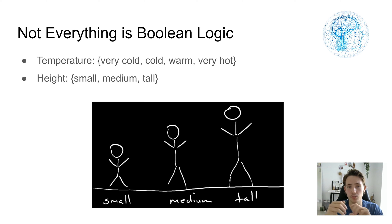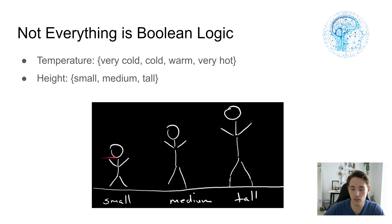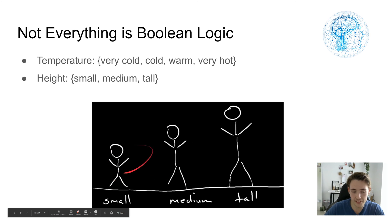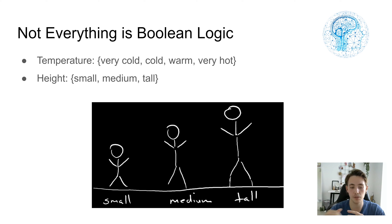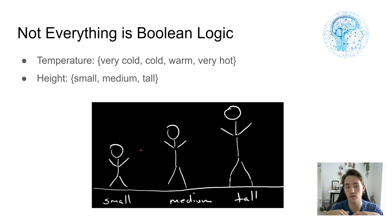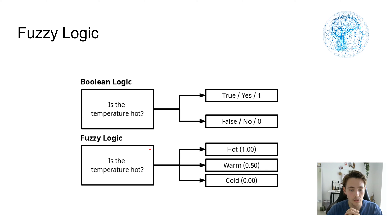Another example is temperature — dividing it into very cold, cold, warm, or very hot. Or take height — small, medium, or tall. If we have a person in the middle, with boolean logic we can't really say they're 'small-medium' — it's either small or medium. But with fuzzy logic, we can say that person is a step between our rules, representing a small-medium degree. So we divide our program into smaller and more continuous steps.